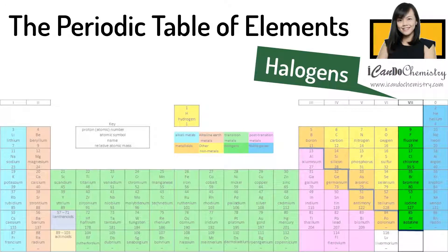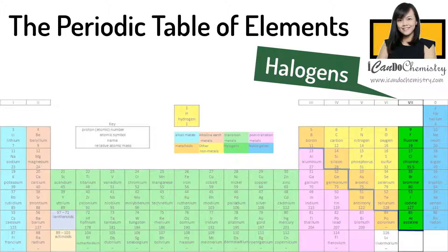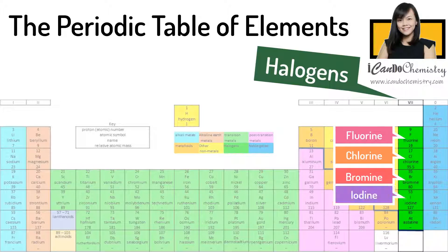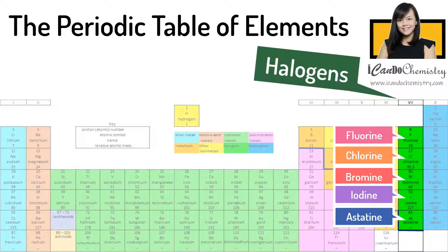Group 7 elements are called the halogens. The elements in this group are fluorine, chlorine, bromine, iodine, and astatine.